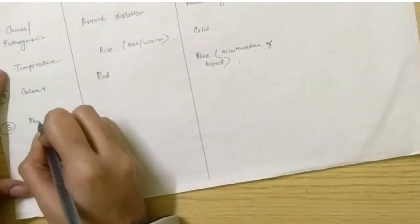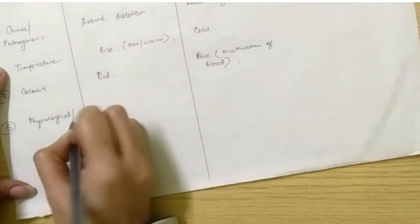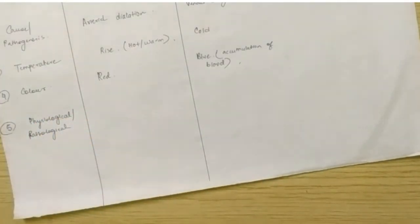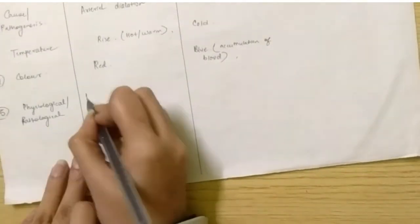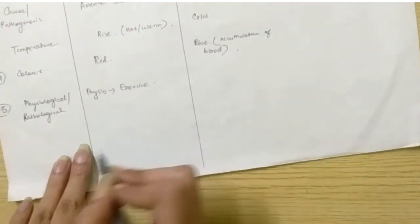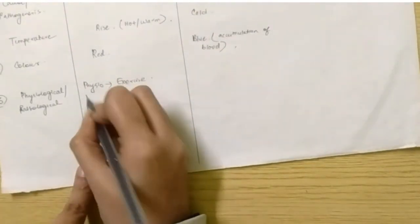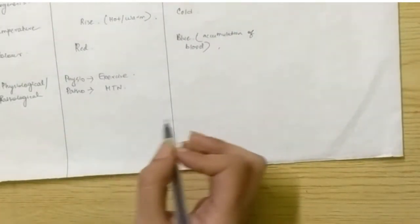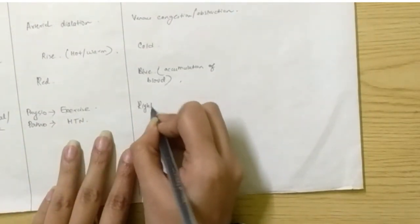Fifth point is, is it physiological or a pathological process? So, see, hyperemia can be both physiological as well as pathological. If it is physiological, then that can be due to exercise. Obviously, if you exercise more, then the amount of blood reaching to that area, that organ will be more. And it can be pathological in case of hypertension. And congestion is usually a pathological phenomenon. As I've discussed here, it is a pathological condition. So, that occurs in right-sided heart failure.